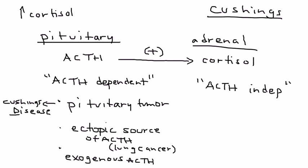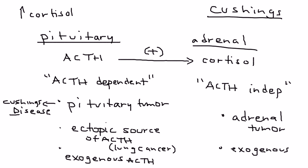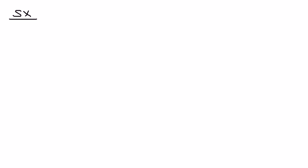The ACTH-independent types of Cushing's fortunately number only two. The first is when there's an actual tumor in the adrenal gland itself. The second is any scenario in which a patient is receiving exogenous cortisol from an outside source.